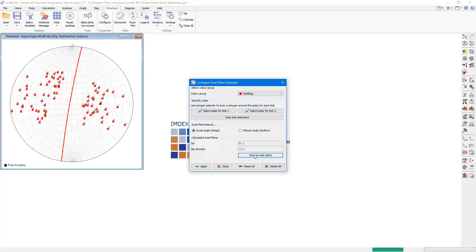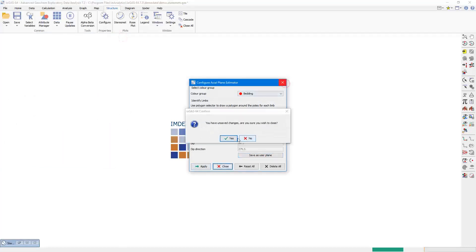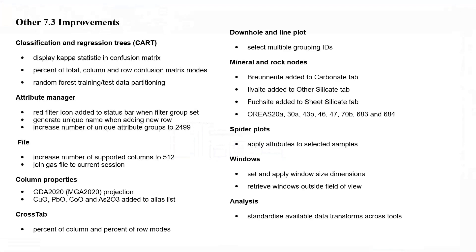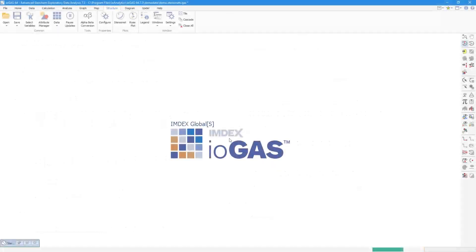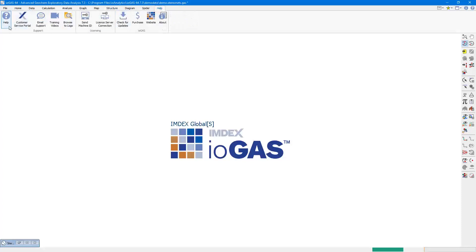That concludes our video on some of the new features and improvements found in iGAS version 7.3. This version also contains a number of other improvements and fixes, including improvements to the classification and regression trees tool, usability improvements to the attribute manager, an increase in the supported number of maximum columns in a workspace, and support for MGA 2020 projection. For more info, please refer to our help file or contact us if you have any questions. Thanks for watching and we'll see you next time.